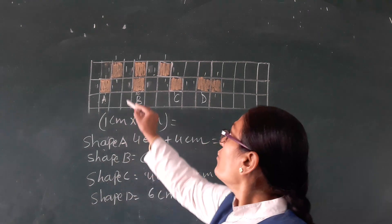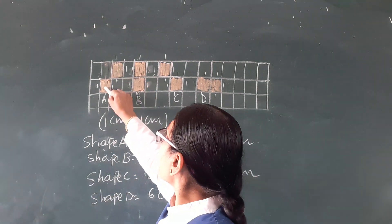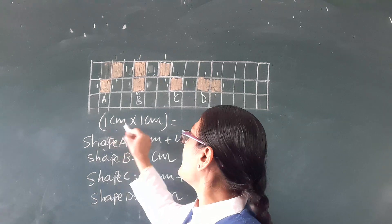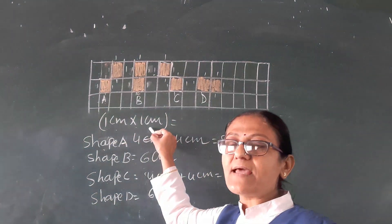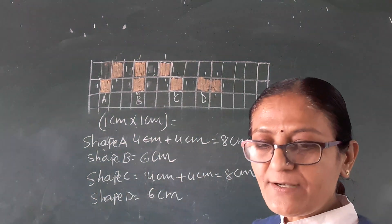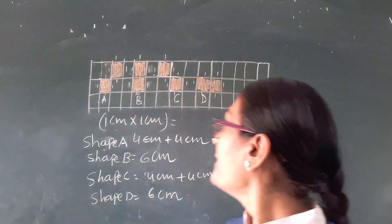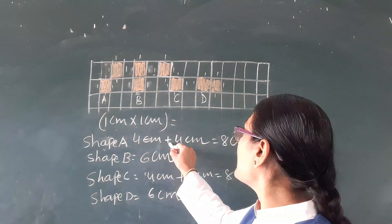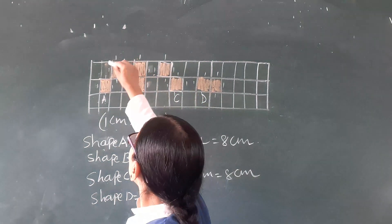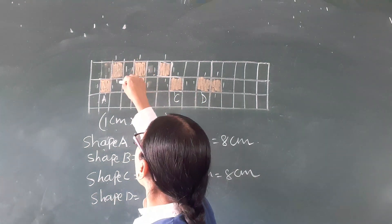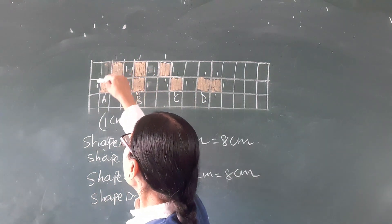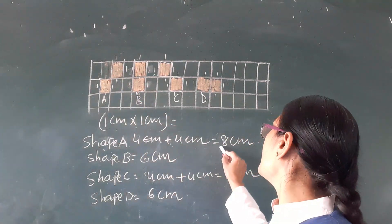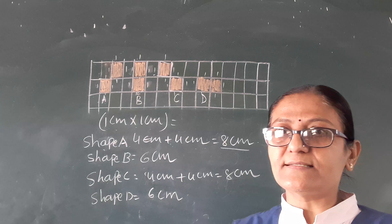Each square is 1 cm by 1 cm. For shape A, counting the boundary: 4 cm on top and 4 cm on the bottom, means 4 cm plus 4 cm, there is 8 cm total boundary.